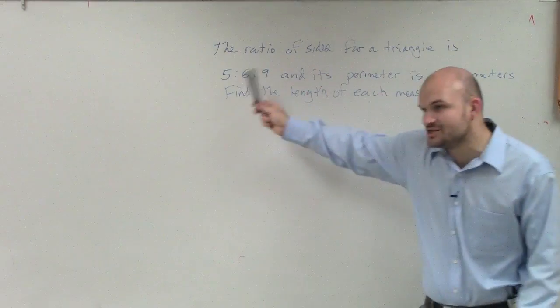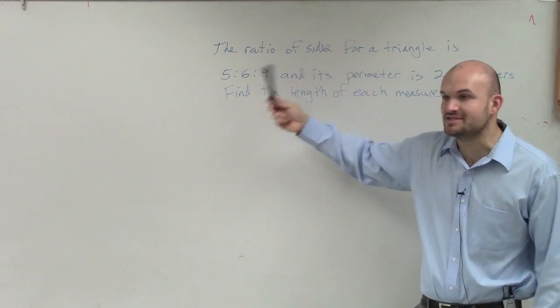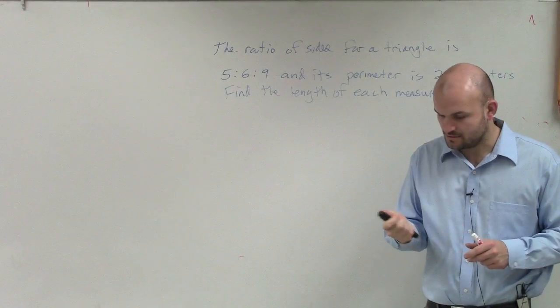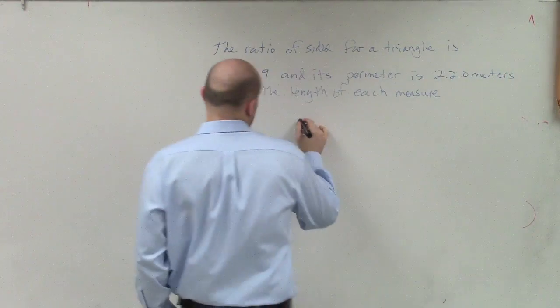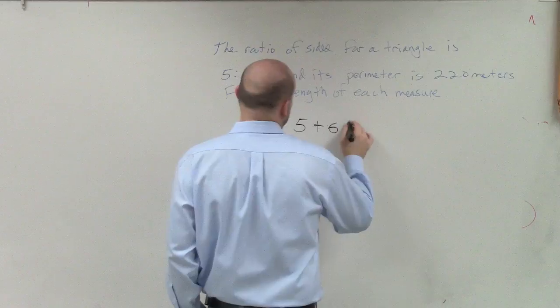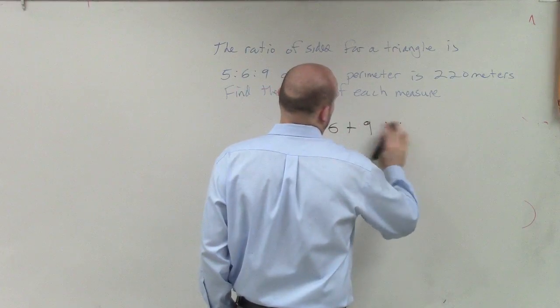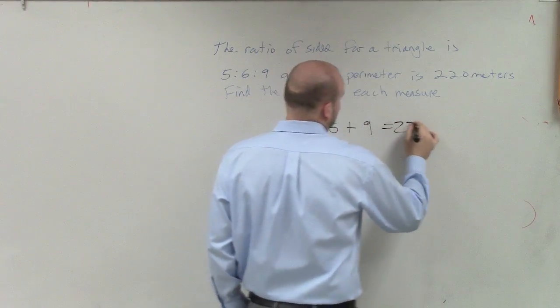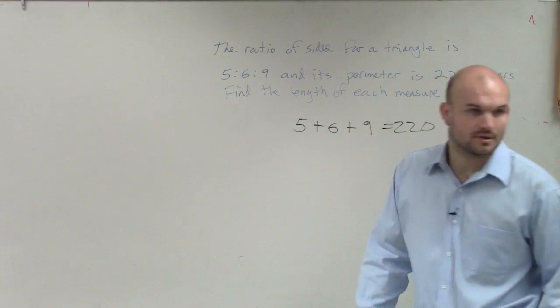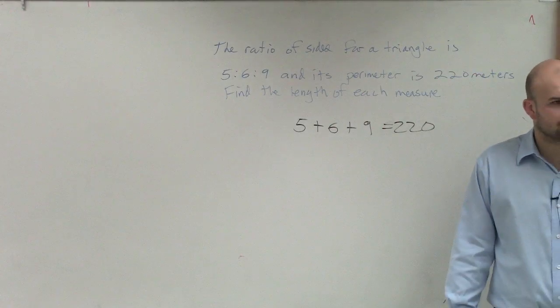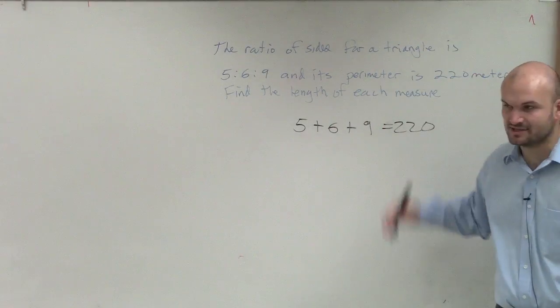So it's saying the ratio of those sides is 5, 6, and 9. So could it be actually 5, 6, and 9? No, that obviously doesn't work.